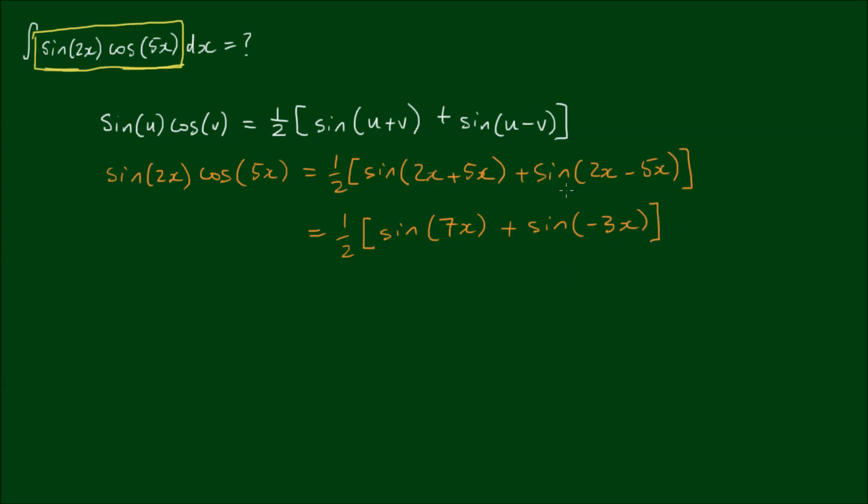So with sine being an odd function, the sine of a negative term inside of the parenthesis, the negative can come out the front. So it'll be negative by the sine of positive 3x.